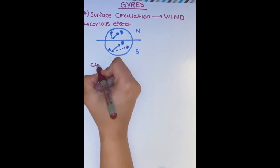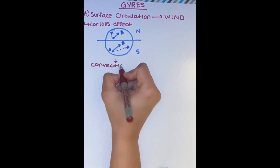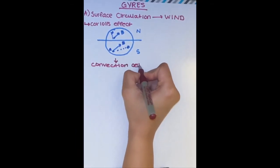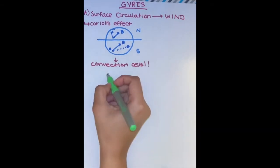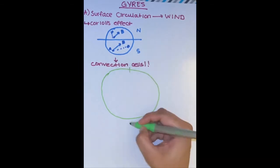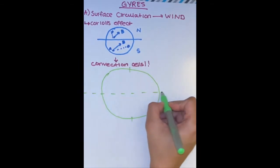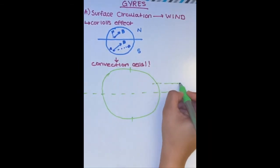These wind patterns also drive convection cells. Convection cells are driven by a density difference. Remember, heavier items sink or fall and lighter components rise.